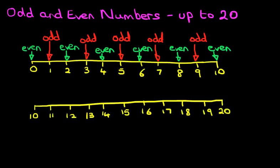Now when we're doing numbers from 10 to 20, this is really easy — all we have to look at is the number on the right, the digit on the right. Because 0 and 0 — both 10 and 20 end in 0 — it means that both of these numbers are even.